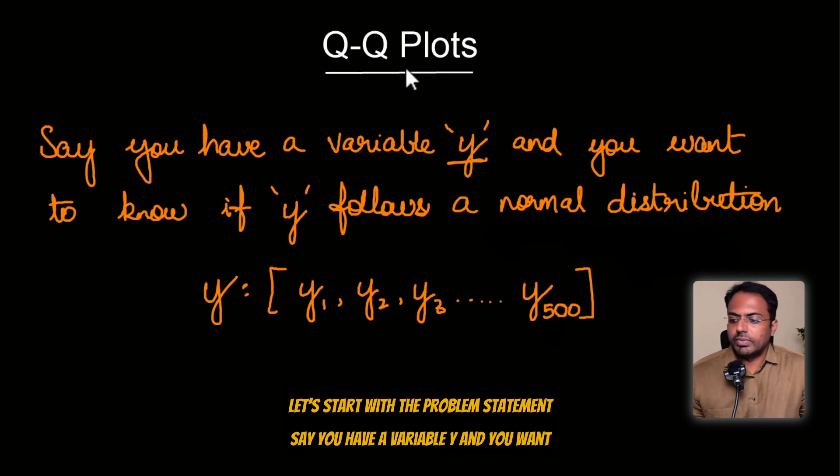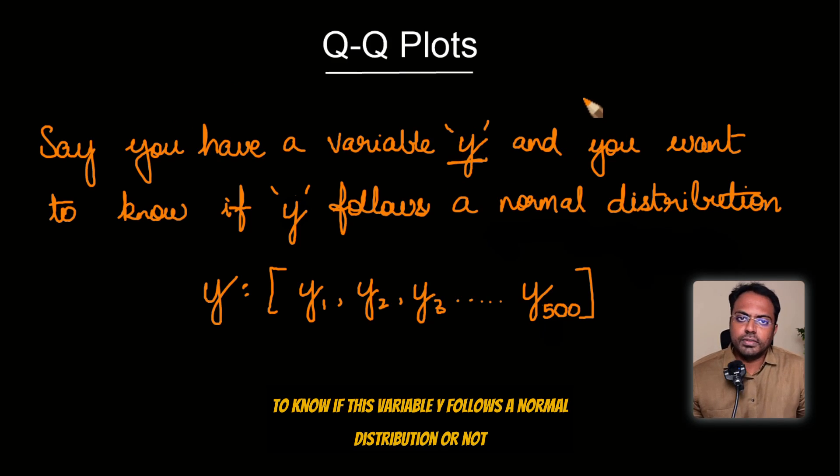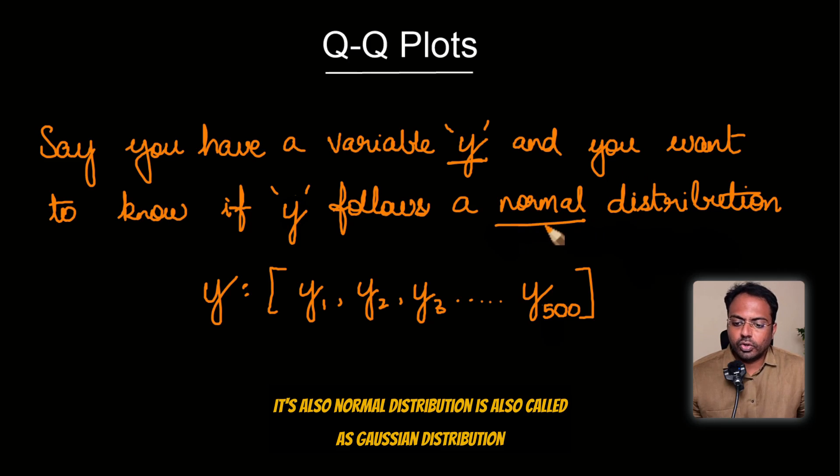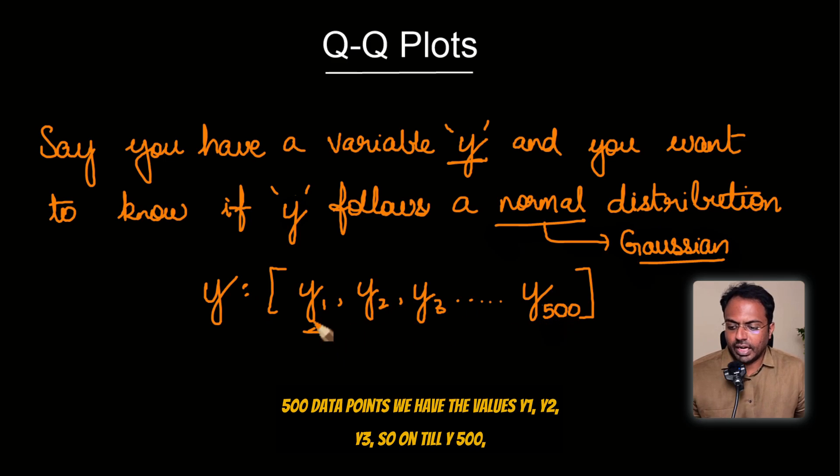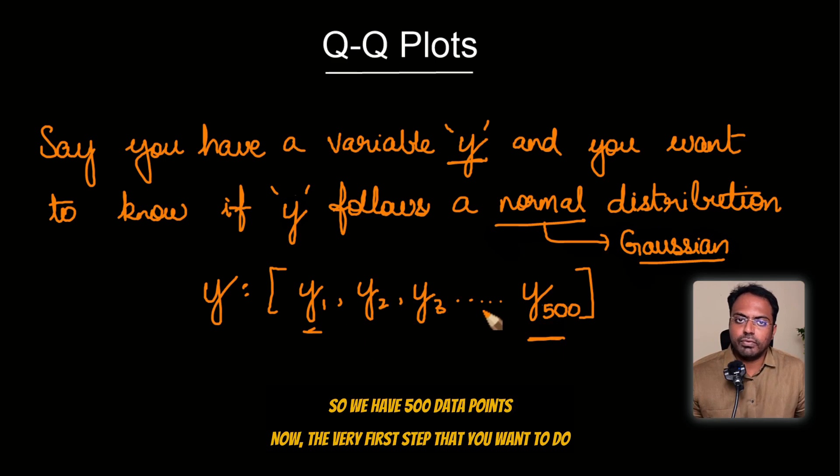So let's start with the problem statement. Say you have a variable y and you want to know if this variable y follows a normal distribution or not. It's also called as Gaussian distribution. And you have this variable y which contains 500 data points, the values y1, y2, y3, so on till y500.